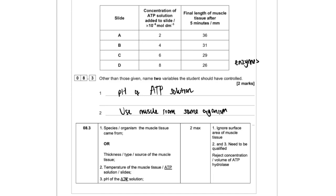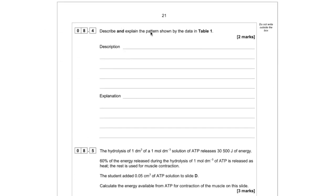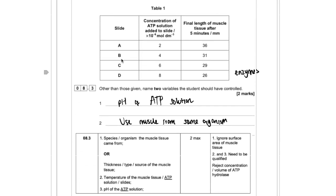So now we want to describe and explain the pattern shown by data in table one. So describing it shouldn't be too difficult. What we can see is that as we're increasing the concentration of the ATP solution, our length of muscle tissue is decreasing.